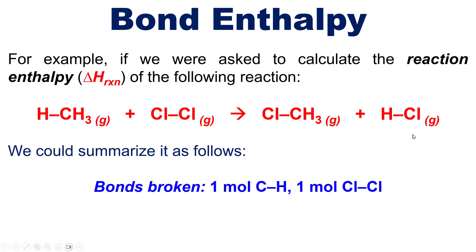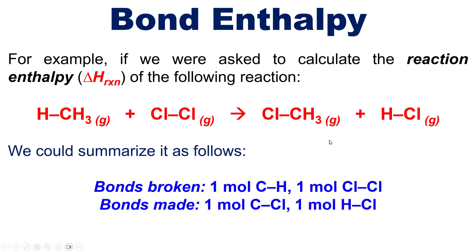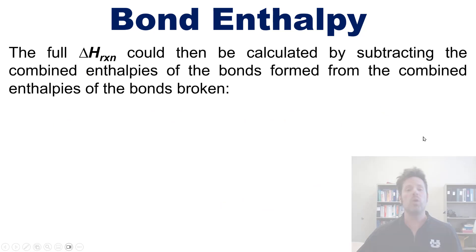The number of bonds formed — that is, the bonds shown on the product side — is one mole of carbon-chlorine single bonds right here and one mole of hydrogen-chlorine bonds shown right there.